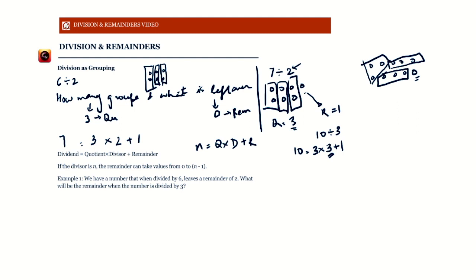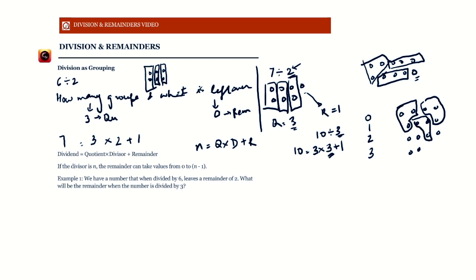Now think about this: if the divisor is n — for example 3 here or 2 earlier — what can the remainder be? If the divisor is 3, the remainder can be 0, 1, or 2. The remainder cannot be 3. Why? Because if I'm making groups of 3 and I have 3 marbles left over, I would simply make another group of 3, so I'd never truly leave 3 as a remainder.